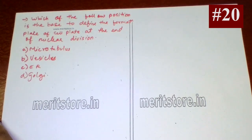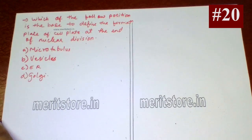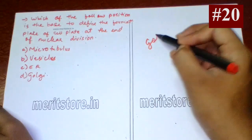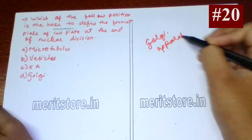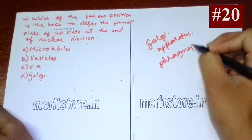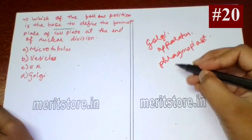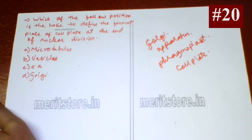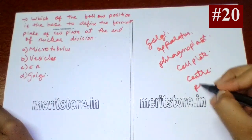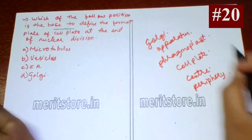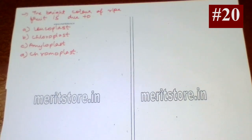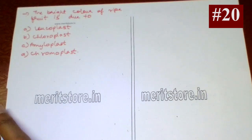Vesicles provided by the Golgi apparatus are the basis for defining the formation of the cell plate at the end of nuclear division. Golgi vesicles unite to form the phragmoplast, which joins to form the cell plate. The cell plate is first laid down in the center and then proceeds towards the periphery for cell division. So vesicles are the correct answer.